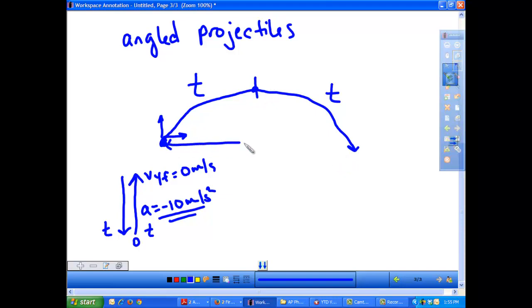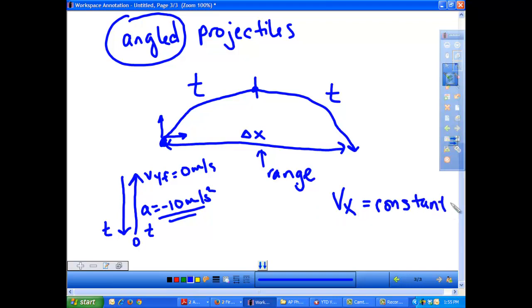Also, the distance that the projectile travels, we're going to call that our change in x. This is the range of the projectile. If I want to know how far a catapult can fire, I'm looking for the range of it. I want to know its change in x. Now, an angled projectile has the same criteria as a horizontally launched one. Remember we said that in the x direction, our velocity is constant. Acceleration doesn't happen horizontally. Gravity doesn't act left to right. That would be super weird if it did. So, because of that, our horizontal speed is going to stay the same.